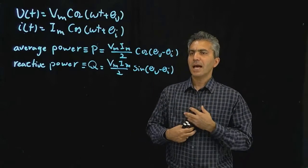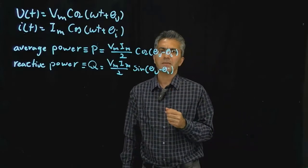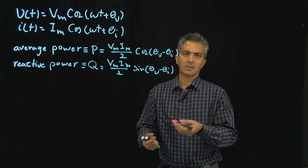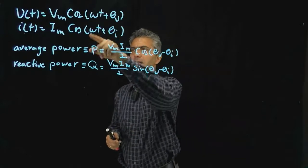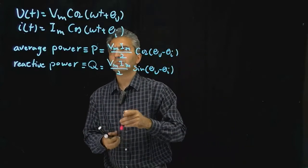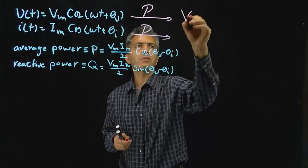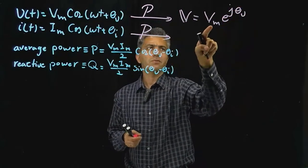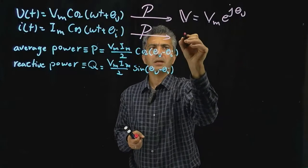Today we're going to see how we can do this kind of calculation in the phasor domain using complex numbers, and whether that adds any simplicity or helps with the calculations. Let's take these two signals and move them into their phasor domain equivalents. The phasor transformation on the voltage gives us V_m · e^(jθ_v), where the amplitude and phase information is conserved and the time-domain dependency is gone. The same applies to the current.